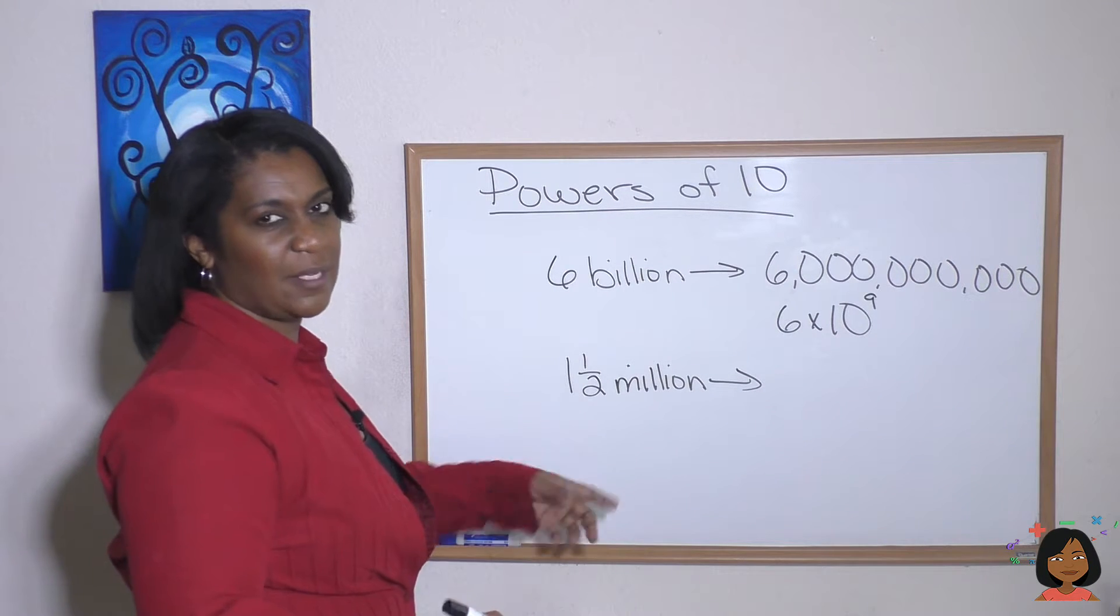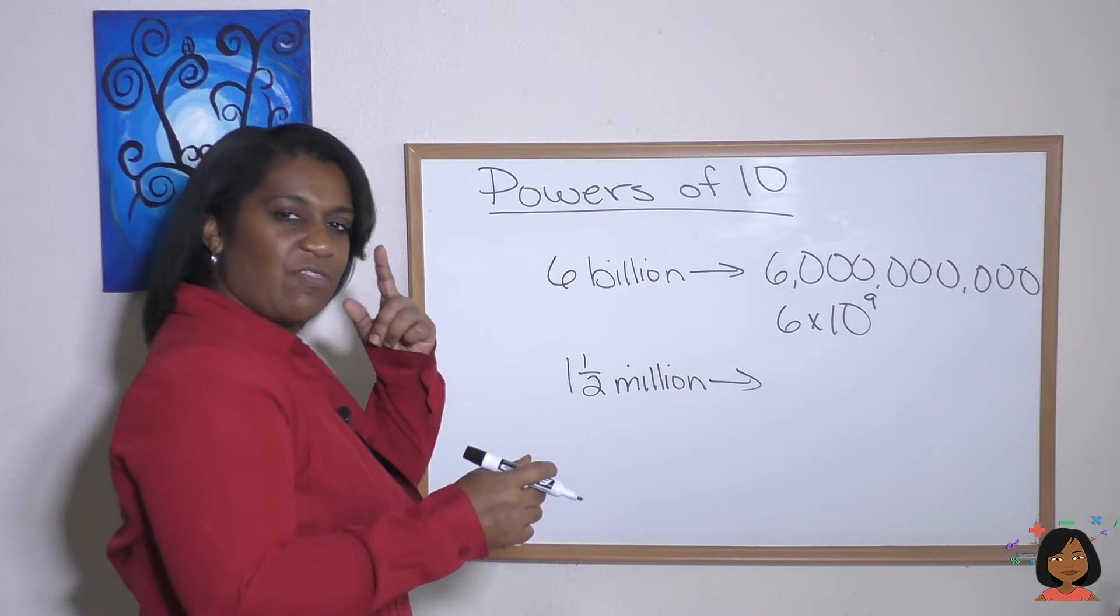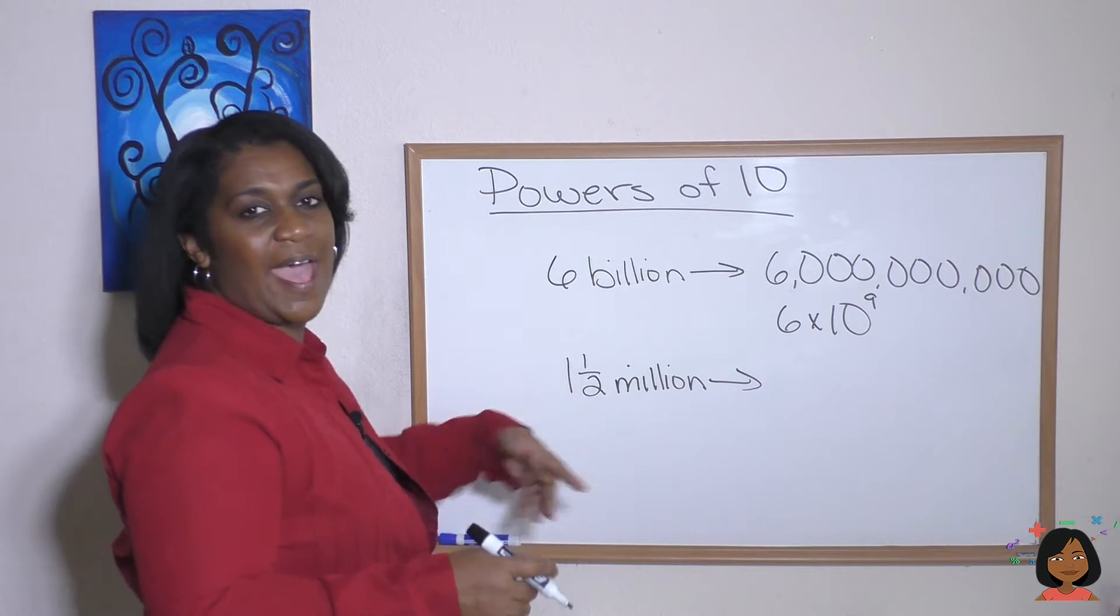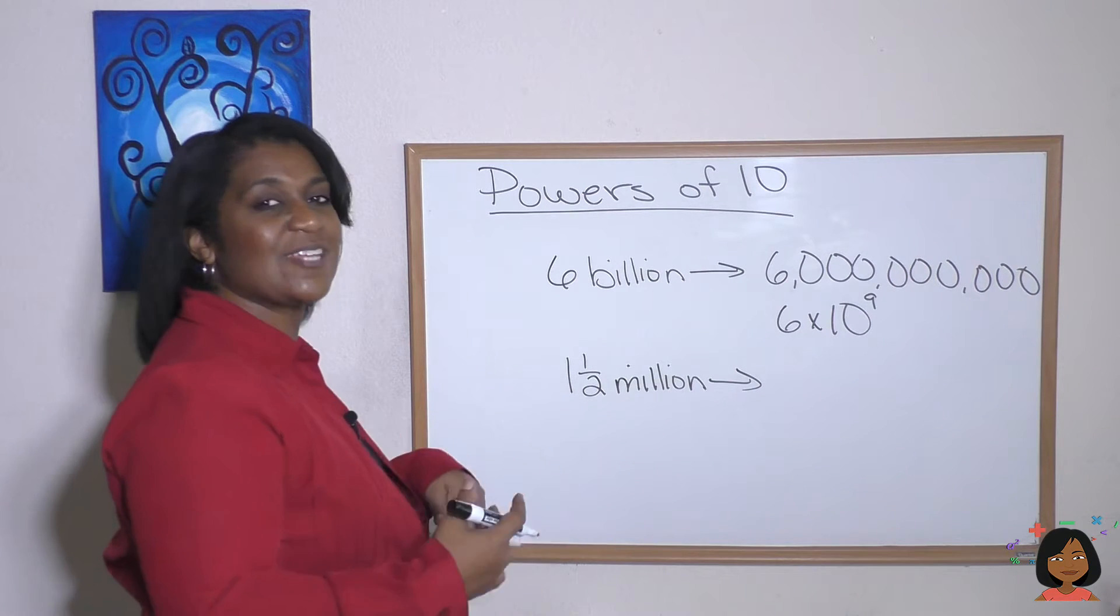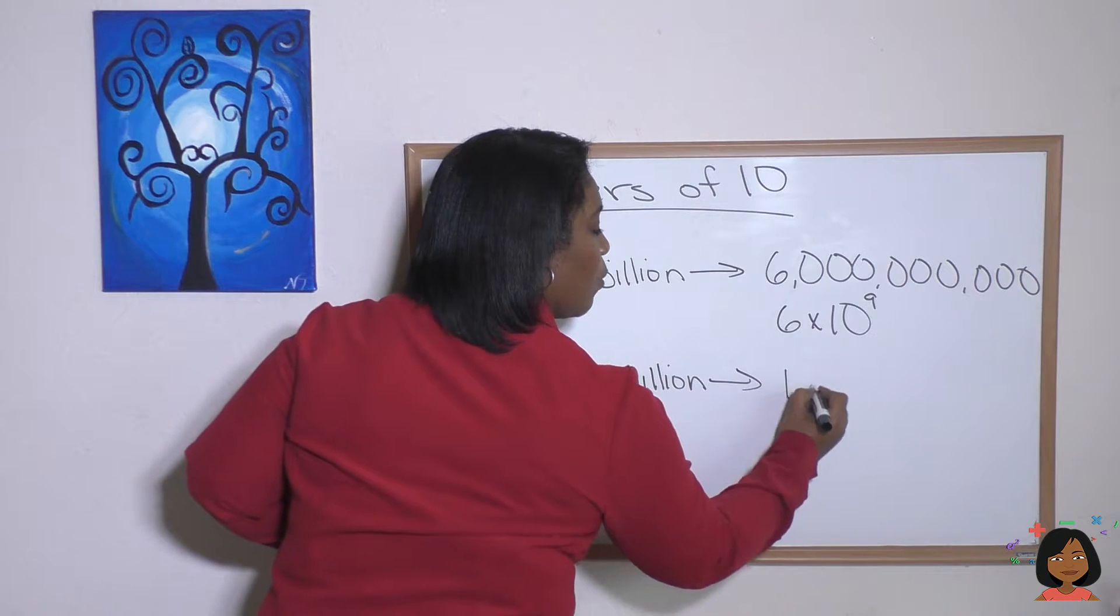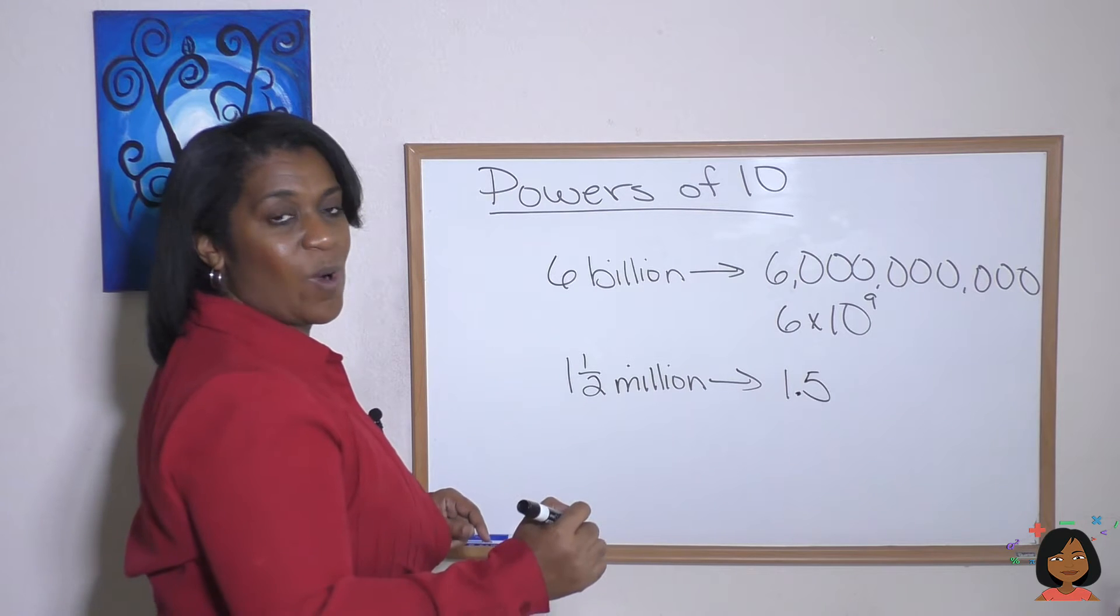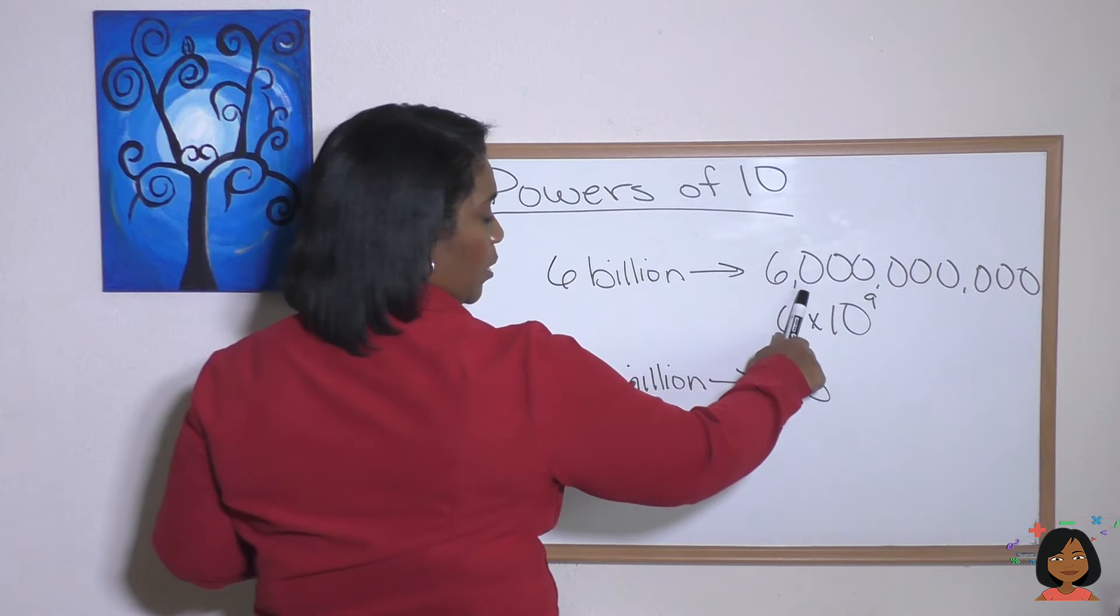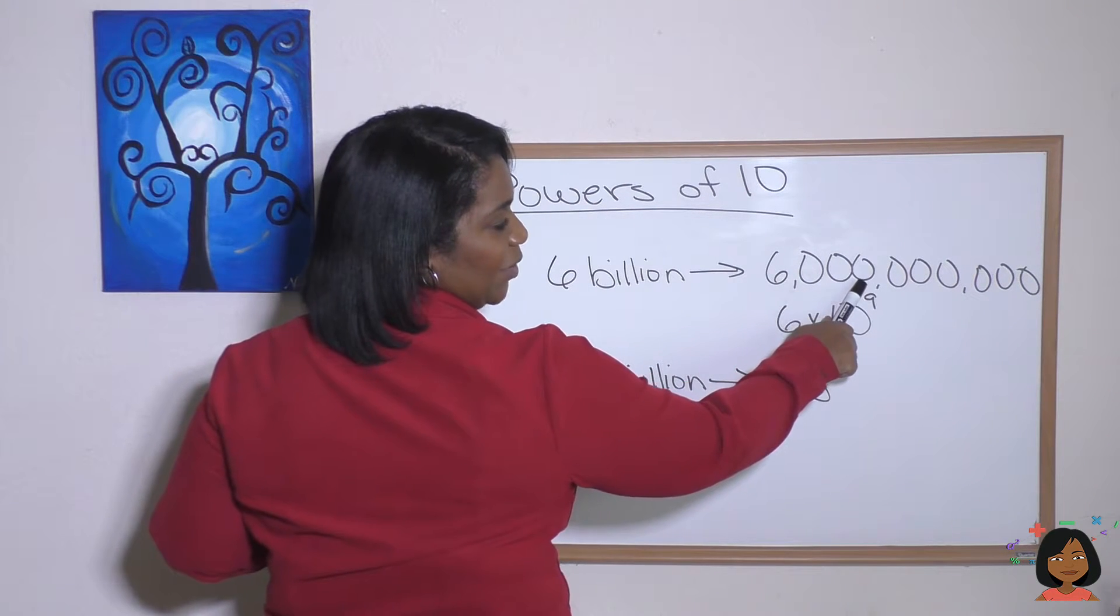But what about 1 and a half million? Things are a little bit different here. You've got to think this one through. Well, 1 and a half, the first thing you want to do is change that to a decimal. So the 1 and a half would be 1.5. And now, is it going to be all, well, we know millions would be here, right?